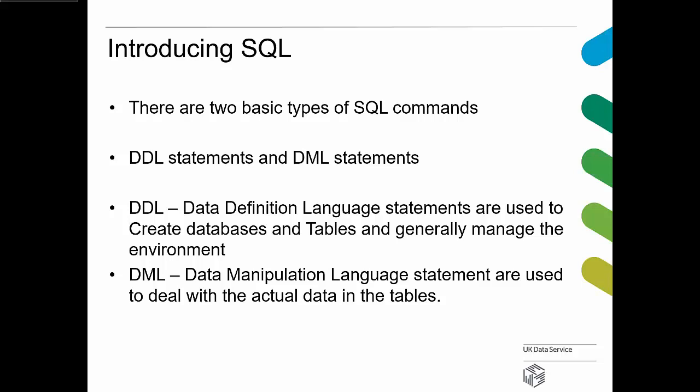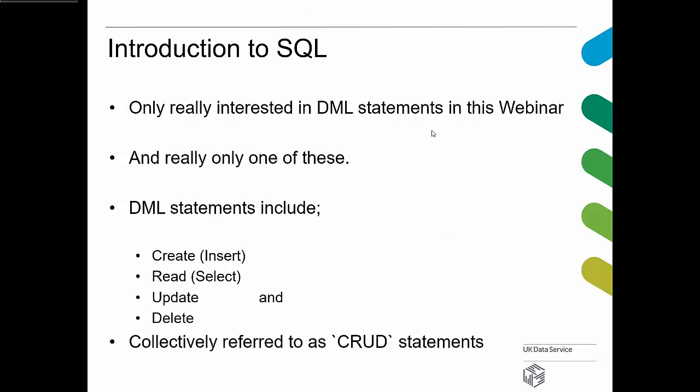Now we're going to start looking at SQL itself. There are two basic types of SQL commands: DDL statements — Data Definition Language — used to create databases and tables and generally manage the environment; and DML — Data Manipulation Language — used to deal with actual data in the tables. There are four basic DML operations: Create (INSERT in SQL), Read (SELECT), Update, and Delete — collectively referred to as CRUD statements. We're going to start with a pre-populated database, so we're only really interested in the SELECT statement.